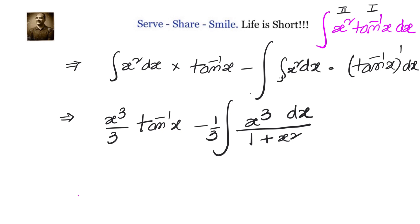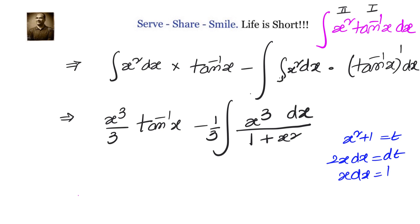So we have to find the integral of x cubed over 1 plus x squared dx. To do that, let us take x squared plus 1 equals t, then 2x dx equals dt, or x dx equals half dt.